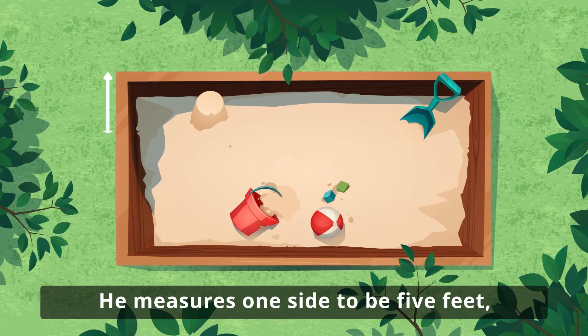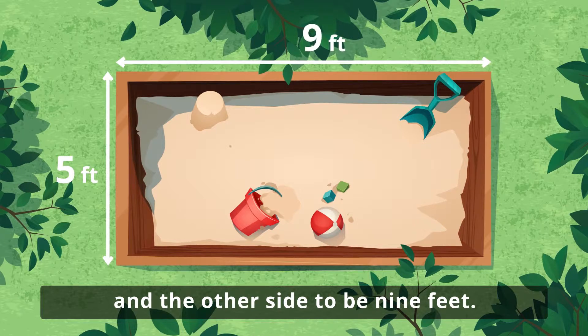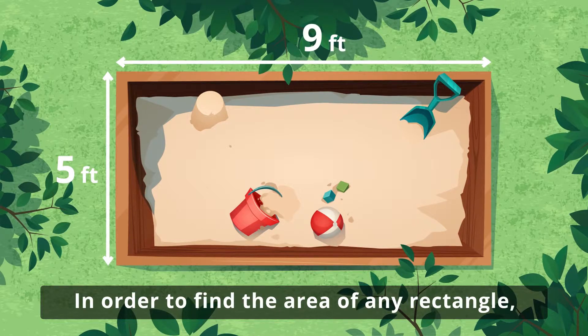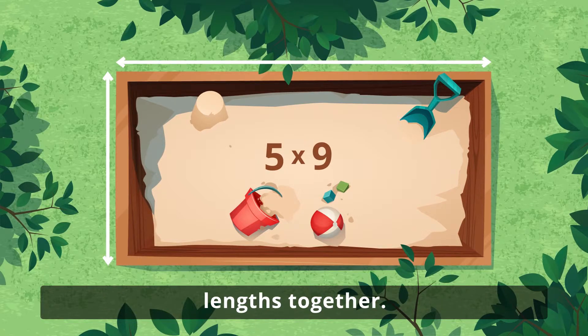He measures one side to be 5 feet and the other side to be 9 feet. In order to find the area of any rectangle, he knows he must multiply the two side lengths together.